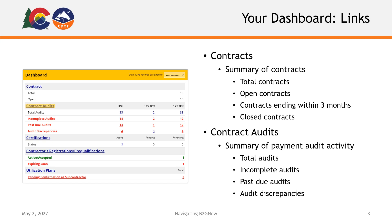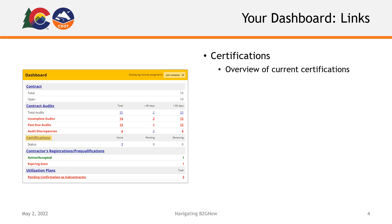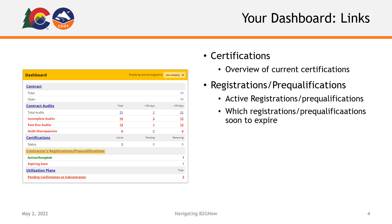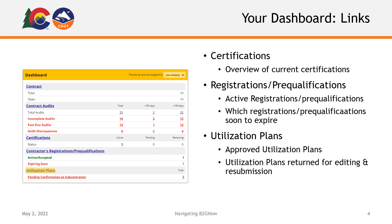The contract audit section will display your total audits, incomplete audits, any past due audits, and any audits with discrepancies. The certification section will give you an overview of your current certifications. The contractor's registration and pre-qualification section will show you your active and accepted registrations and display any registrations or pre-qualifications that will be expiring soon. The utilization plan section will display your approved utilization plans and any that have been returned for editing and resubmission.